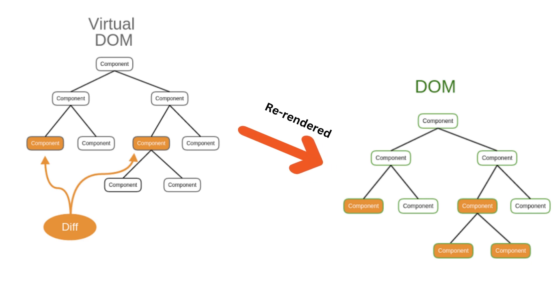Whenever there is a change to the state of a component, React creates a new virtual DOM tree that represents the updated UI. React then compares the new virtual DOM tree with the previous one to determine what has changed.